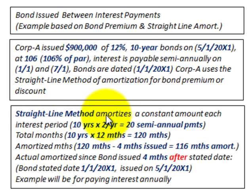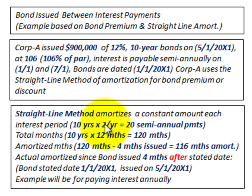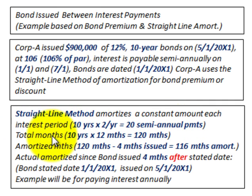With the straight-line method, we amortize at a constant amount each period. We have 10 years on these bonds, paid semi-annually, so there are 20 semi-annual payments. For the total months, the key figure is 10 years times 12 months per year, giving us 120 total months.